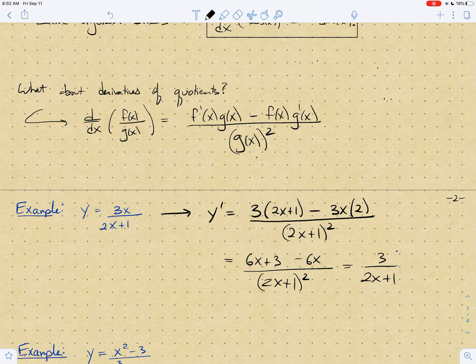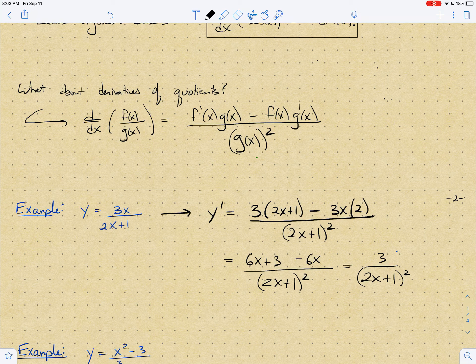over 2x plus 1 all squared. Now some of you, being the good students that you are, are wondering: do I need to expand the bottom? And the answer is no. There's really no reason to ever expand bottoms or denominators. It really doesn't help. So if it's already factored, leave it alone. And if it's not, then don't worry about it.